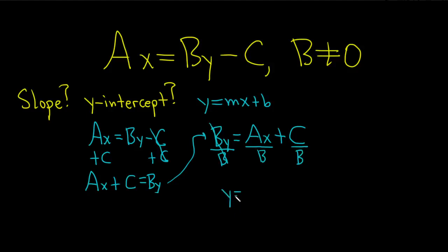So we get Y equals A over B times X, plus C over B.